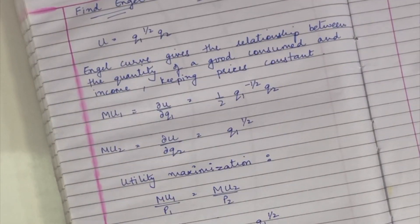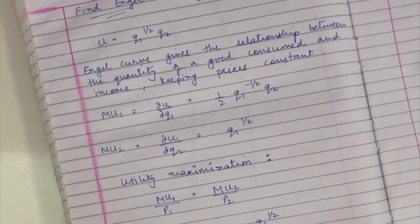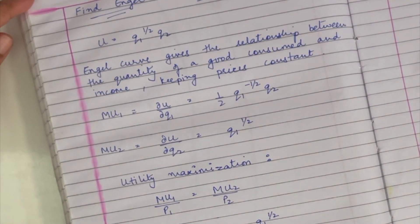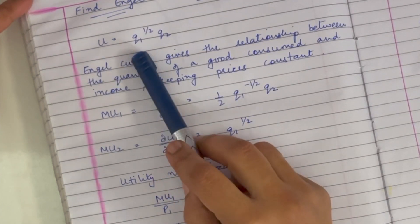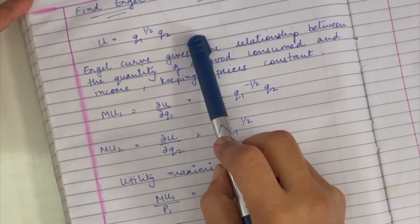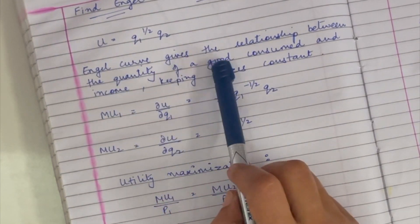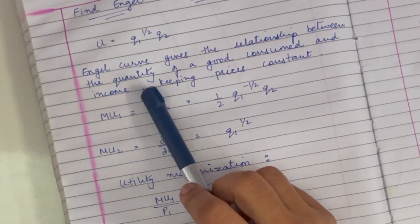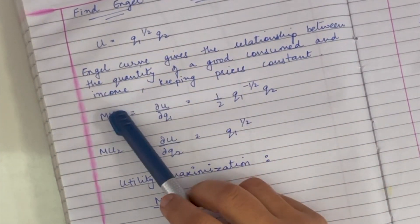Hi friends, I'm Deepti Sharma and today I will be deriving an Engel curve from a utility function. The utility function given is q1 half q2. An Engel curve gives the relationship between the quantity of a good consumed and income, keeping prices constant.